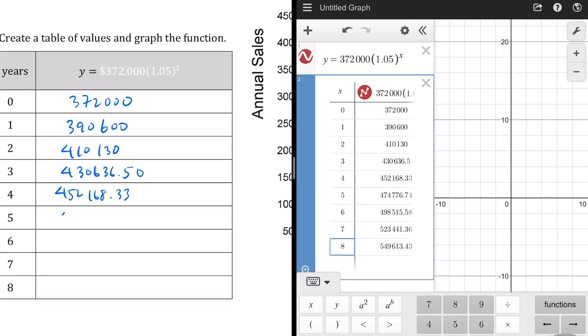At 4, we're at 452,168.33. At 5, we're at 474,776.74. Then we're at 498,515.58. At 7, we're at 523,441.36. And at 8, 549,613.43.